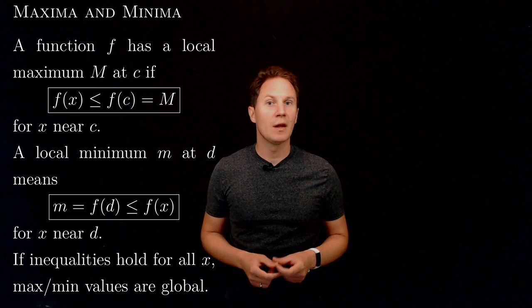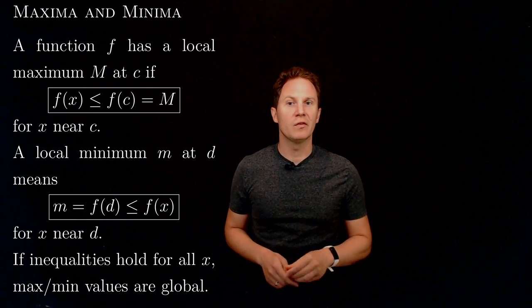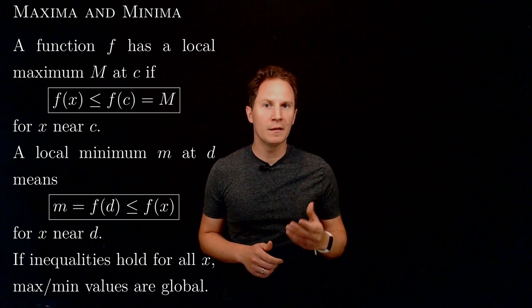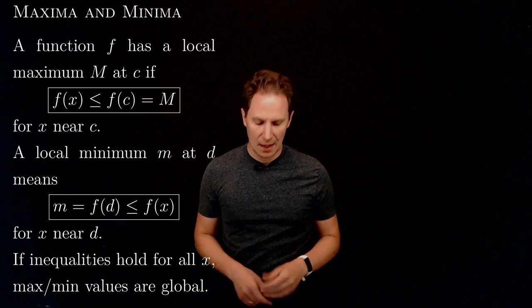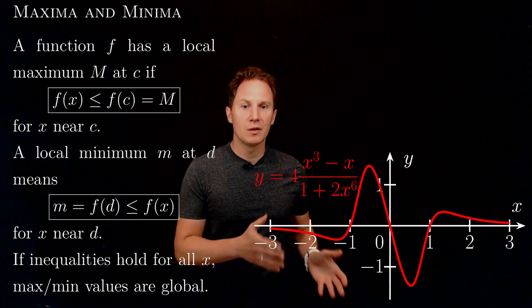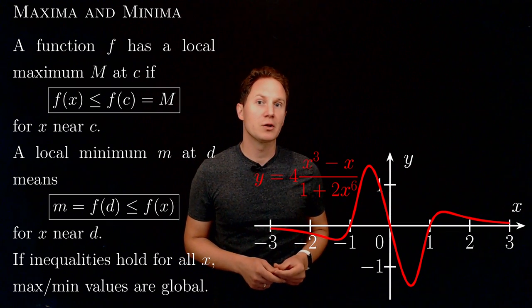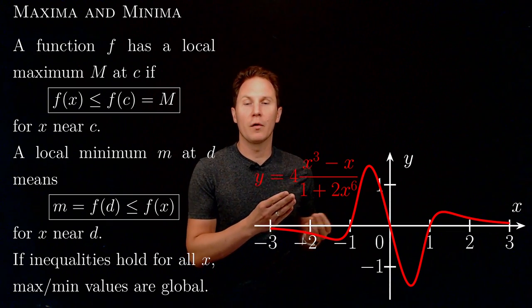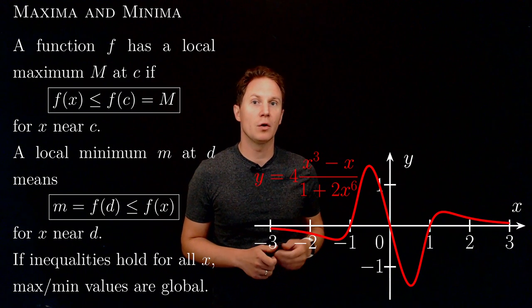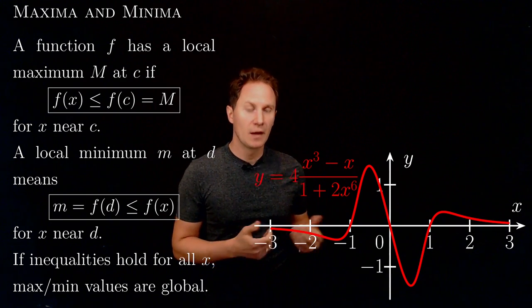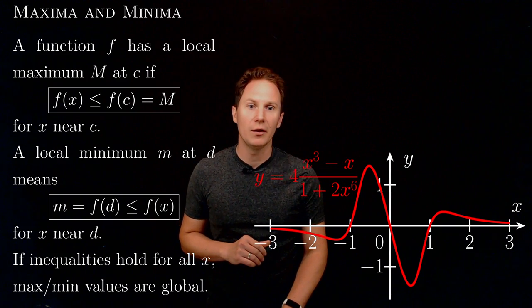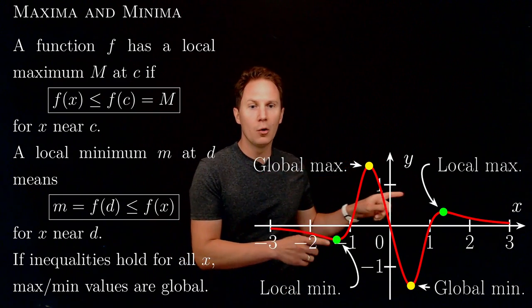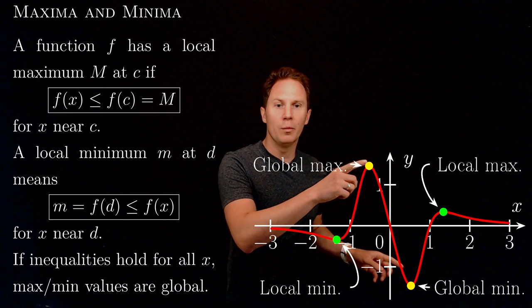Another terminology, another word people use instead of local is relative and instead of global is absolute. Now let me show you an example. Here you can see the graph of a function in red. This is the graph of a rational function, the ratio of two polynomials.